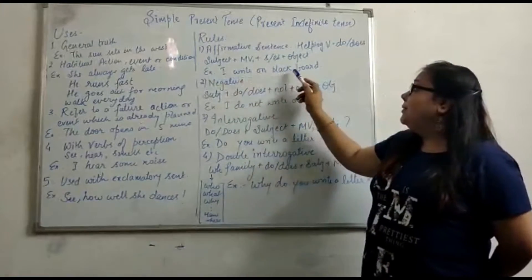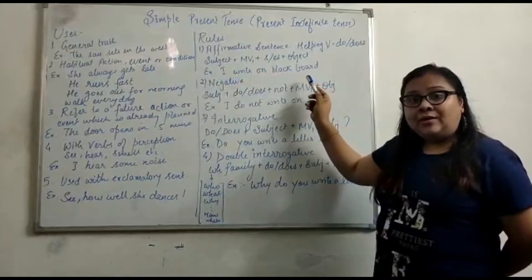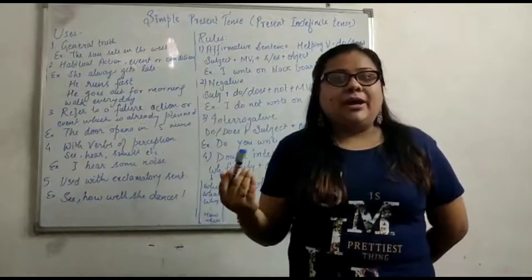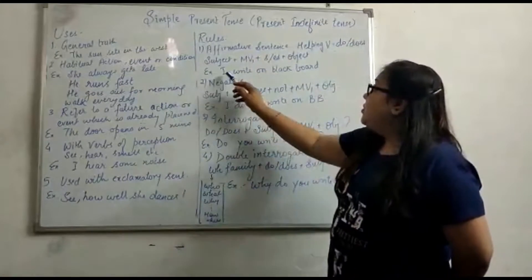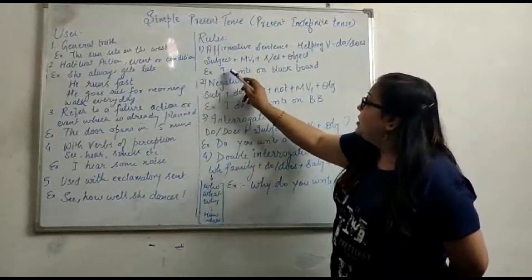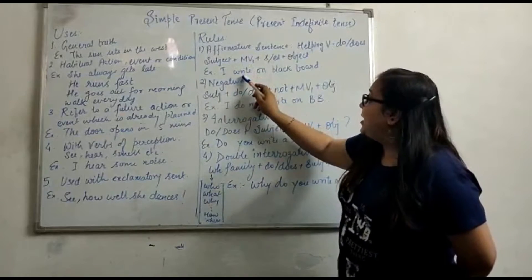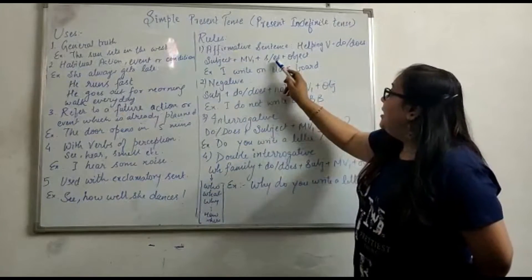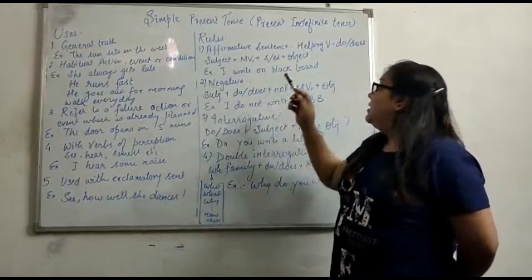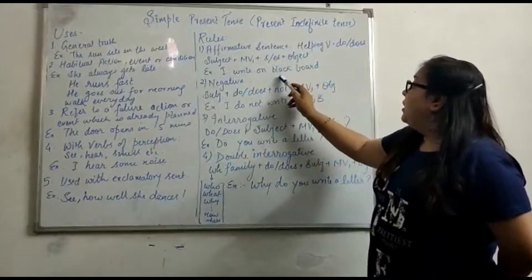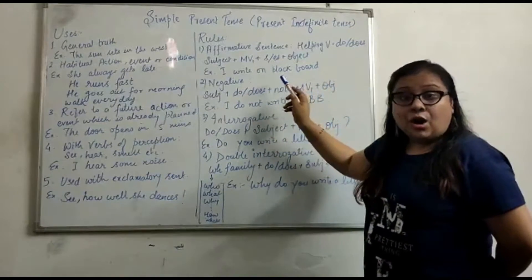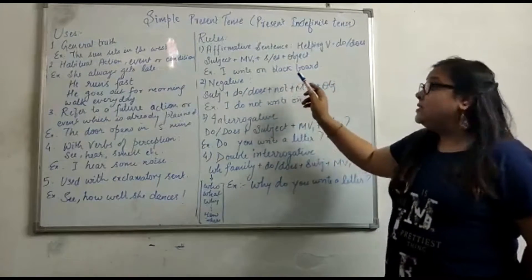For example: I write on the blackboard. This is a habit or something I regularly do. Here, 'I' is the subject, the main verb is 'write,' and 's' or 'es' is not needed because I takes a plural verb. 'On the blackboard' is the object.